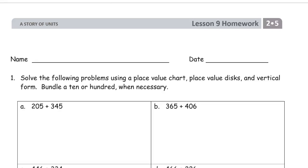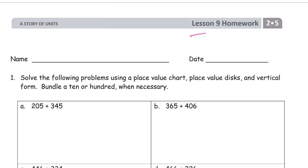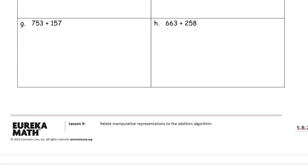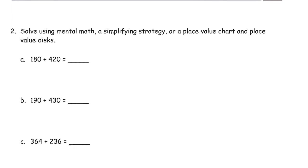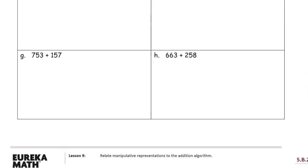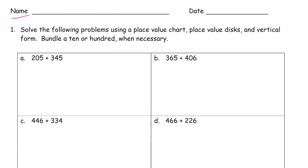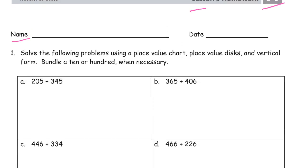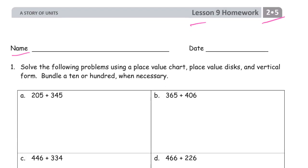Welcome to the homework for lesson 9. This is module 5 of grade 2 and we're doing some vertical addition. Write your name first before we start all this addition. It's going to be all addition, and we really want to do vertical form.